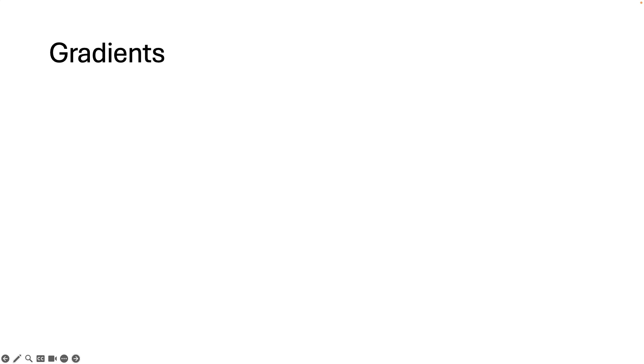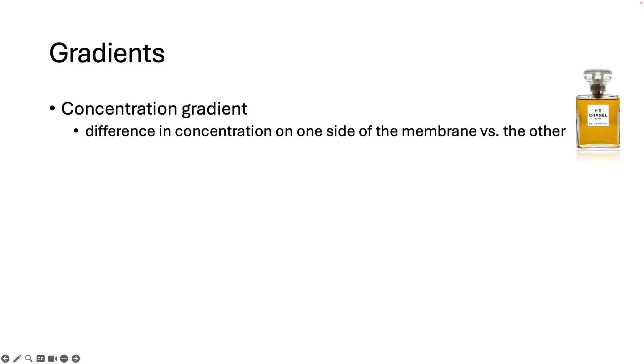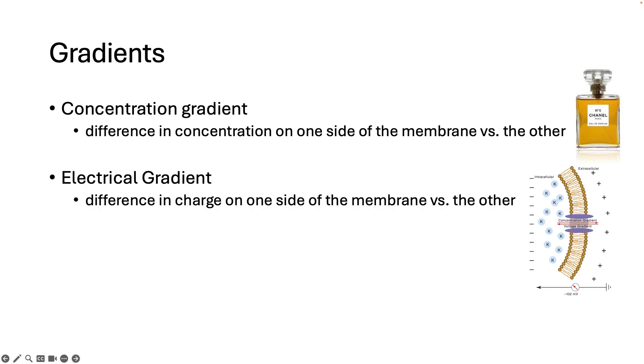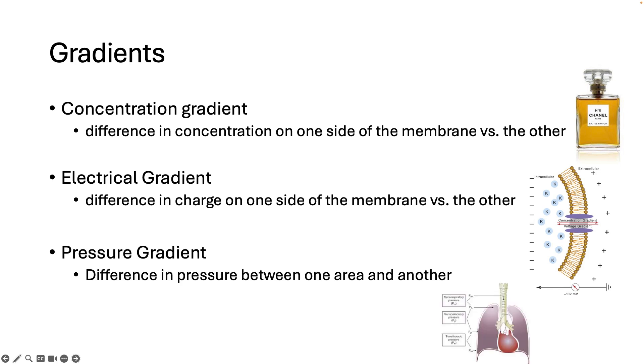There are different types of gradients. When we talk about molecules in space, we're talking about a concentration gradient. You can also have a difference in charge or electricity across the membrane, called an electrical gradient or a membrane potential, and we're going to talk more about that in the nervous system. And the third type of gradient you will see in this course is a pressure gradient, where the pressure in one area is different than that in another area. We're going to talk about those a long time from now in AMP2 in the respiratory system.